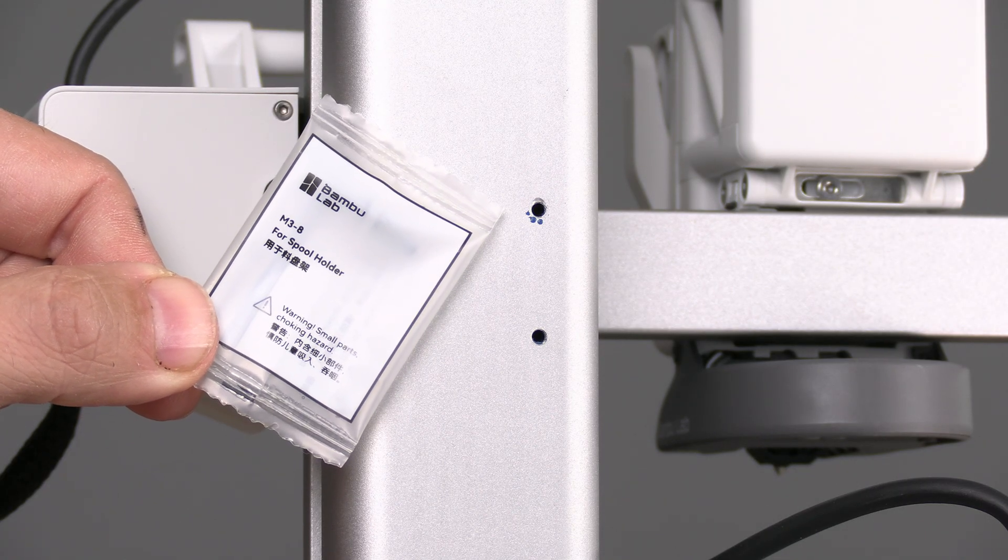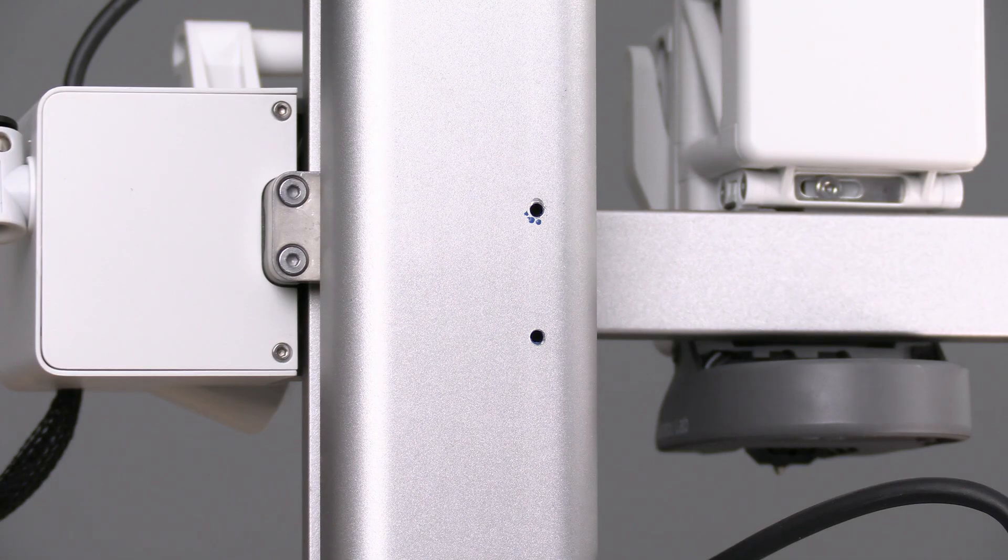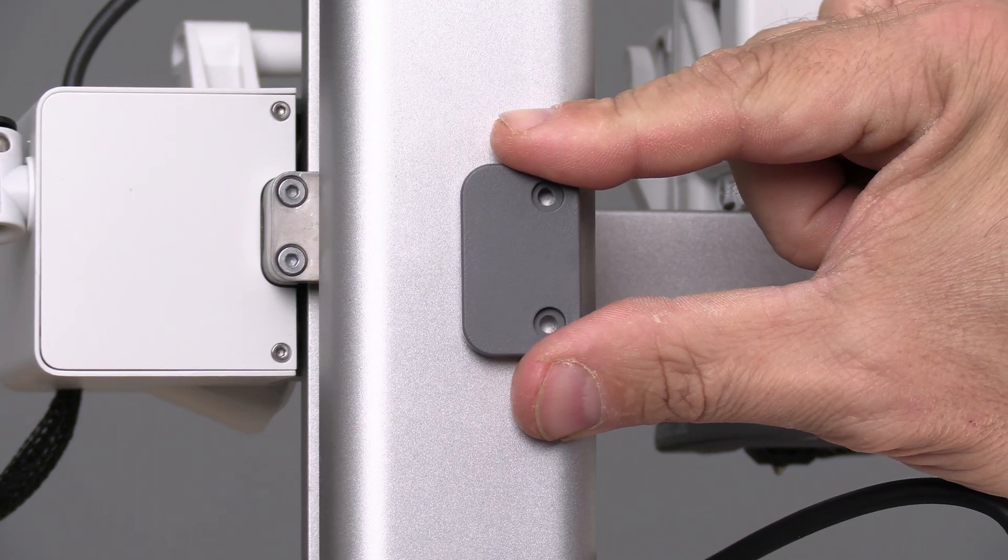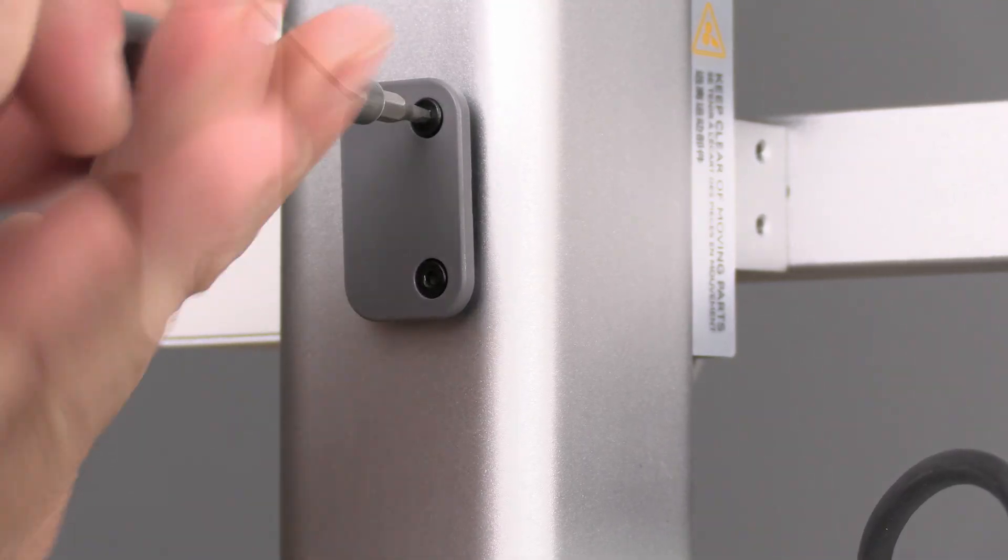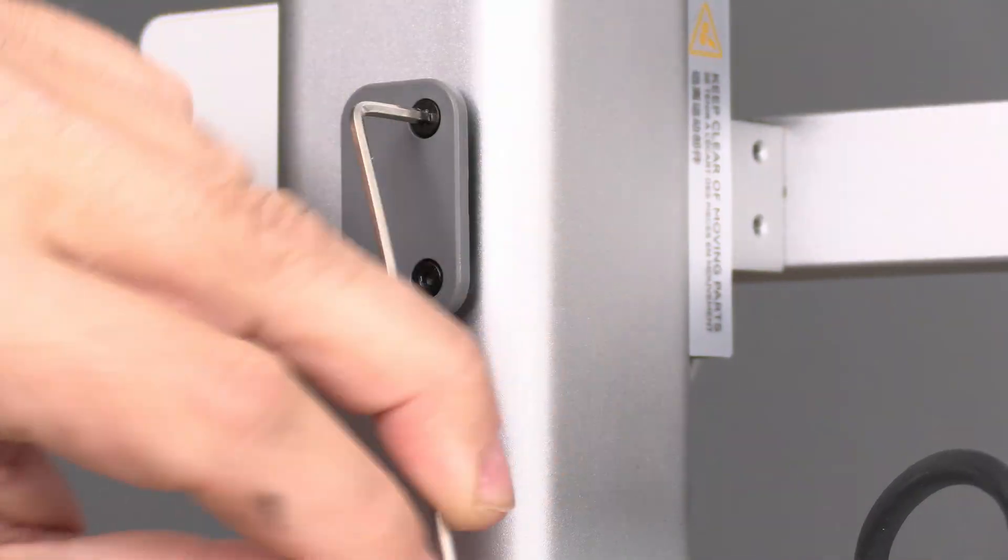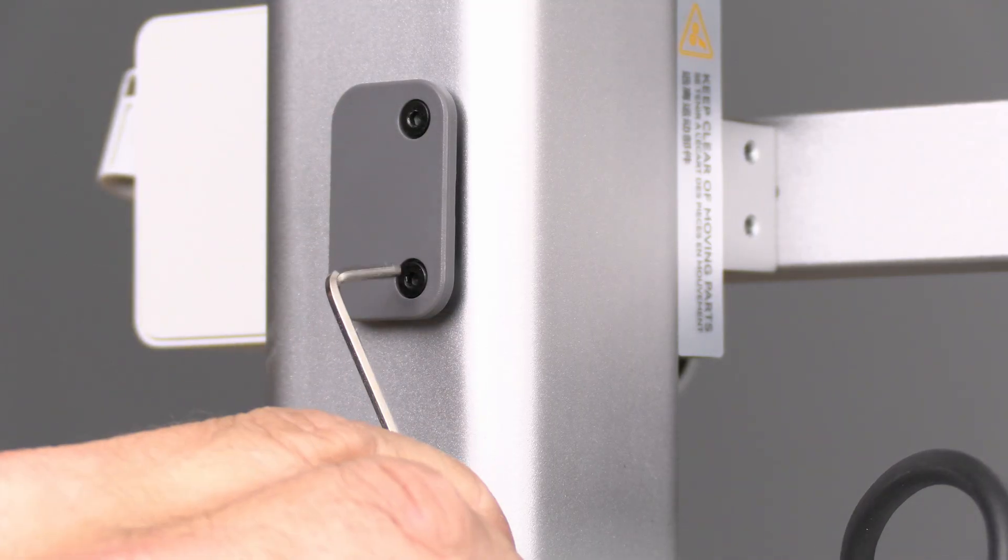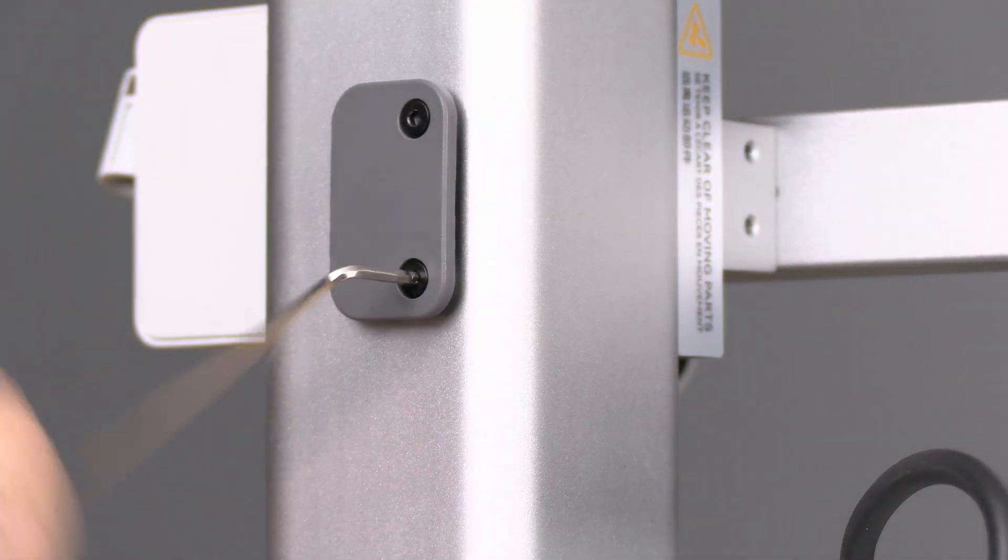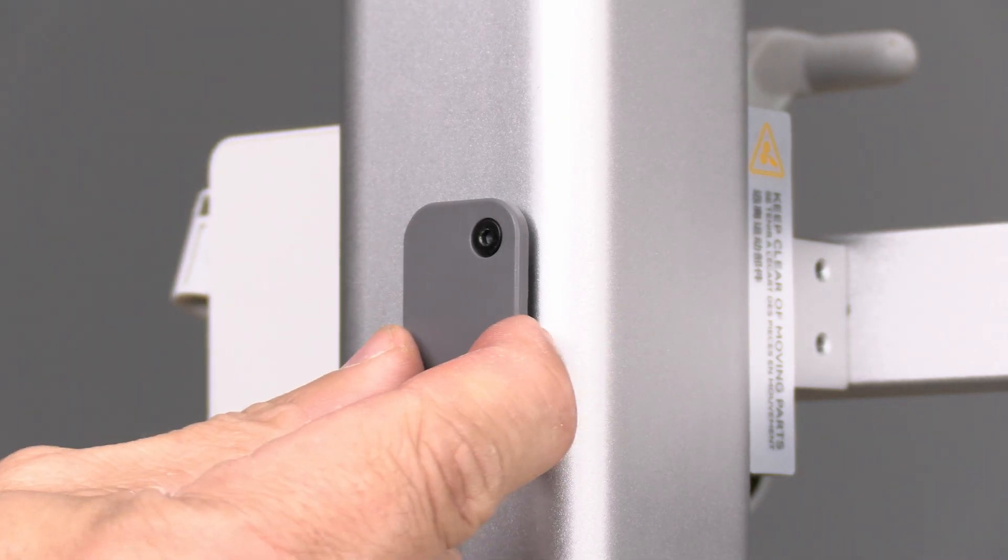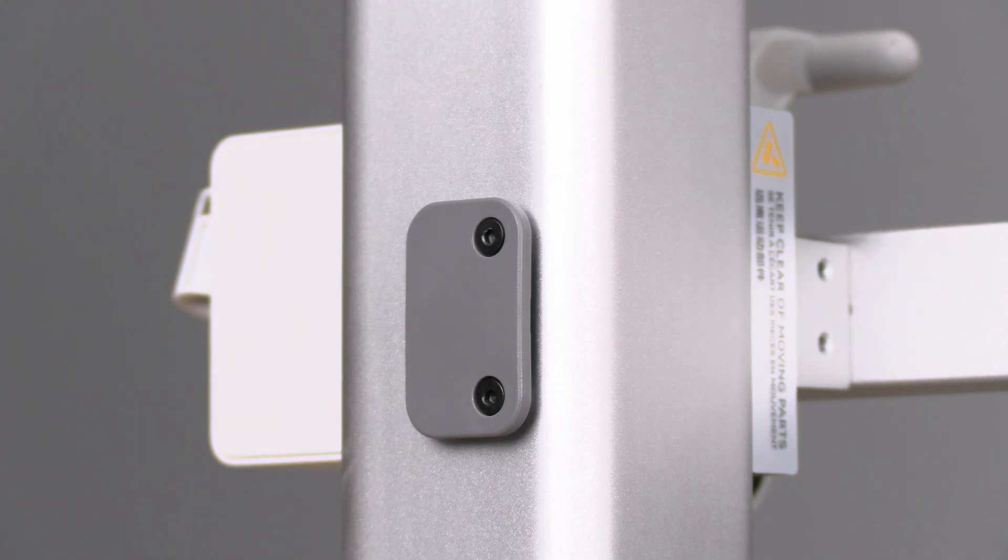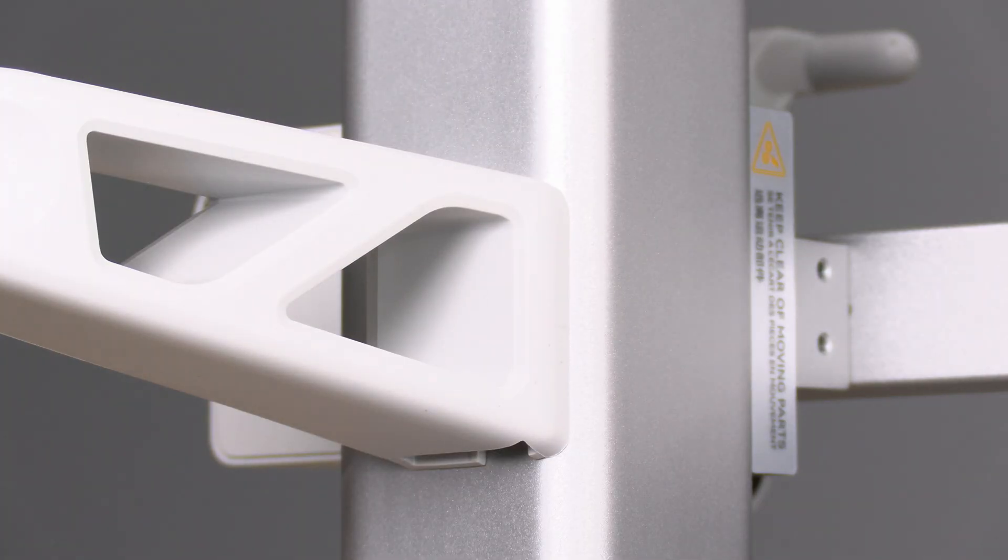Locate this little baggie that says M3-8 and remove both screws. Install this part right here. You will find these screws are somewhat snug. You may want to reverse the Allen key like this to get a little extra torque on them. It is very important that this piece is super secure. With that piece firmly in place, slide the filament holder down over the notch.